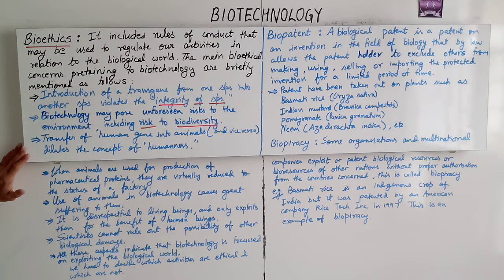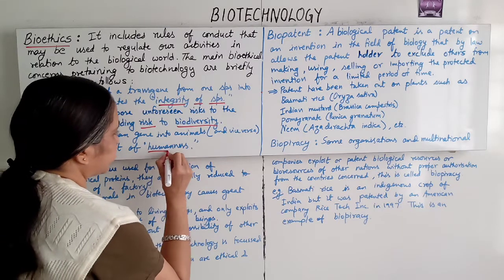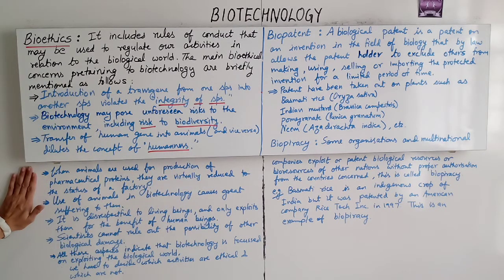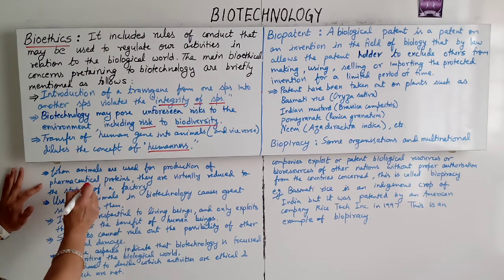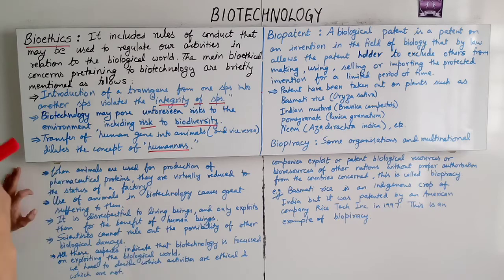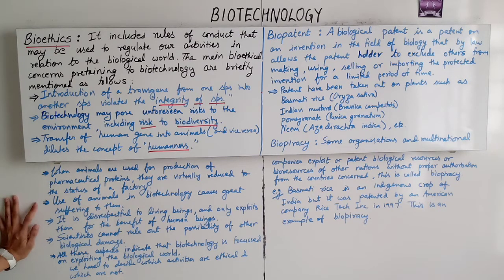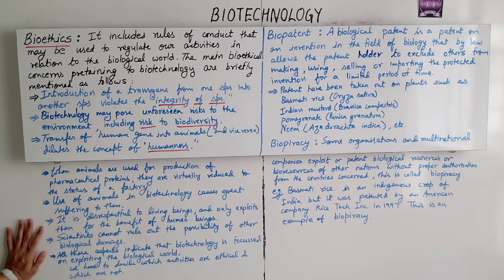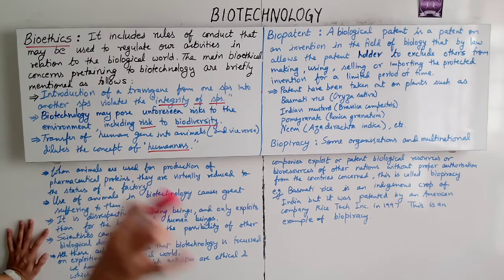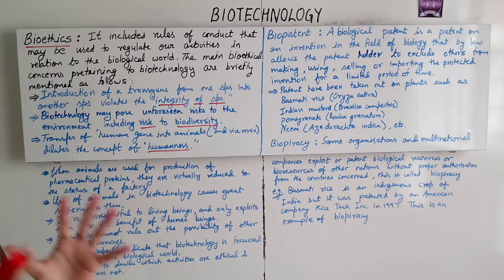Next, transfer of human genes into animals and vice versa dilutes the concept of humanness. When animals are used for the production of pharmaceutical proteins, they are virtually reduced to the status of a factory. Use of animals in biotechnology causes great suffering to them.